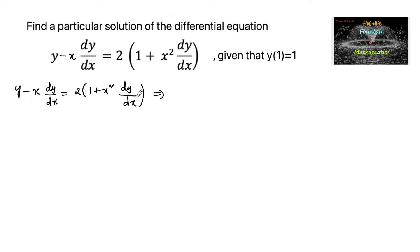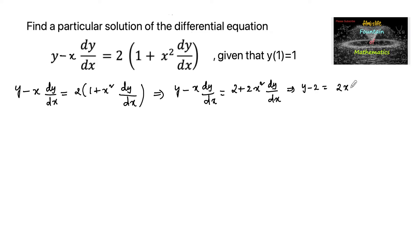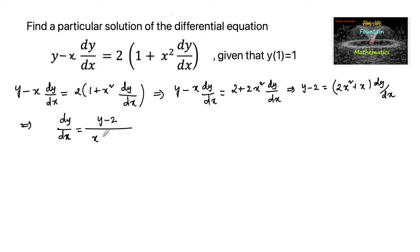Let us rewrite the differential equation: y minus x dy/dx equals 2 plus 2x squared times dy/dx, which can also be written as y minus 2 equals 2x squared plus x times dy/dx. So we can write dy/dx equals y minus 2 upon x times 1 plus 2x.